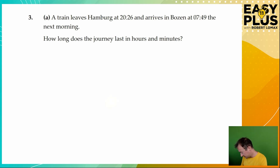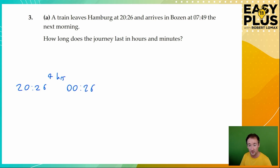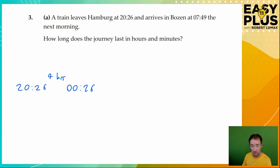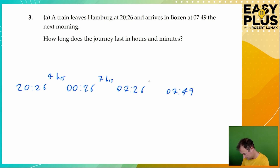So let's have a look at this. We start at 20:26 — 8:26 in the evening. Let's get through to 26 minutes past midnight, so we can count up rather than having to go over the switch from 23:59 to 00:00. Getting from 26 minutes past 8 to 26 minutes past midnight is just four hours. Then let's get to 26 minutes past 7, which is almost our arrival time — that's 7 more hours. Now we just need to get to 7:49, and getting from 26 minutes to 49 minutes is another 23 minutes. Adding that together, we simply have 11 hours and 23 minutes.